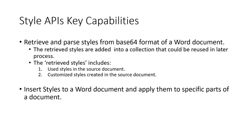There are two major capabilities. One is that we can retrieve and parse styles from a Base64 format of a Word document — this can be another document or the current document. Once the Base64 format is available, you can retrieve different style settings and types, including used styles and customized styles created in the source document. After retrieving all styles from the source, another API lets you apply these styles to your current Word document, giving users the ability to select a specific look and feel from another document and apply it to the current one.